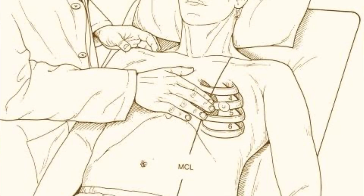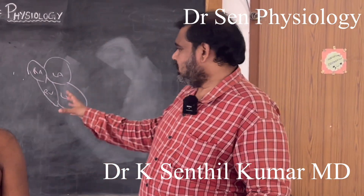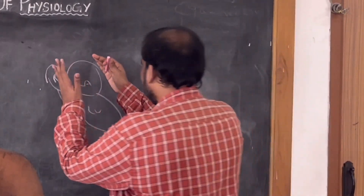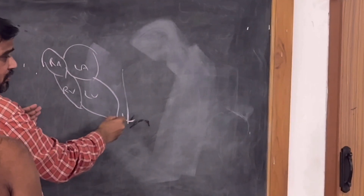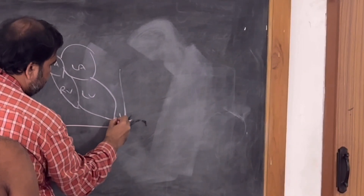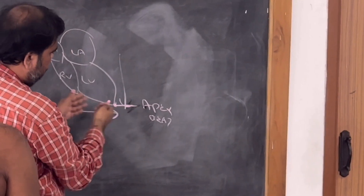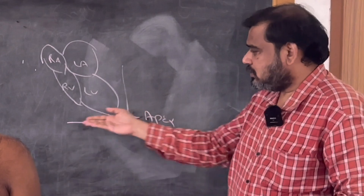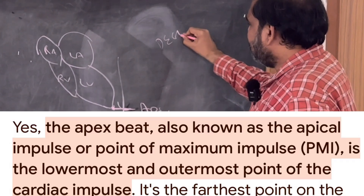Good morning students. Today I am going to tell about how to localize the apex beat by palpation method. Before that, what is apex beat? You can just see this heart diagram. This is the heart which I have drawn. The lowermost point and the outermost point — this is apex beat. Apex beat can be defined as the lowermost and outermost point of definite cardiac impulse.